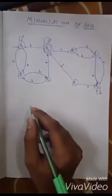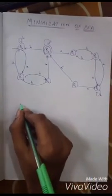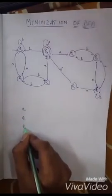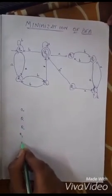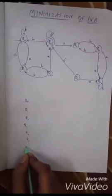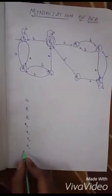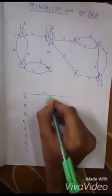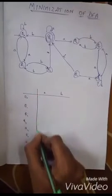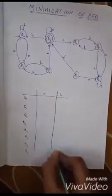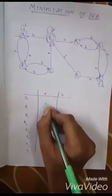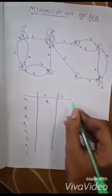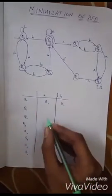For this first we are going to write the transition table. Write down all the states you have. See, for Q0, for A it is going to Q1 and for B it is coming to Q0 again. Similarly write for all the states.